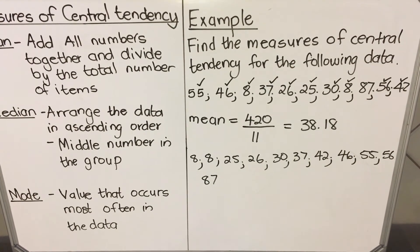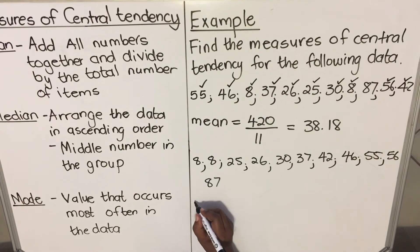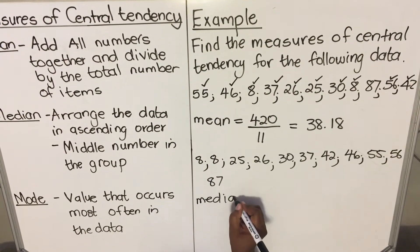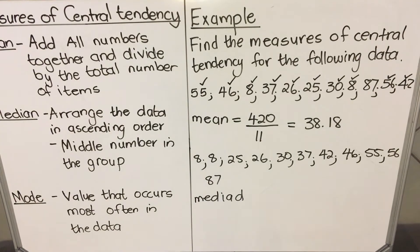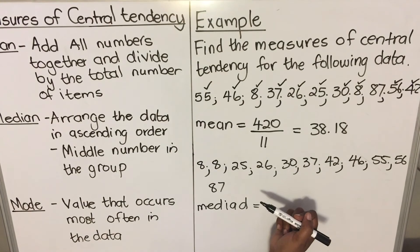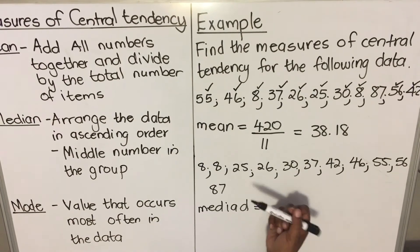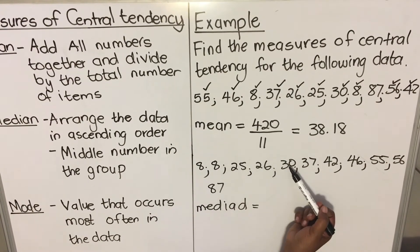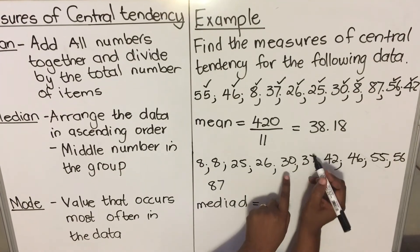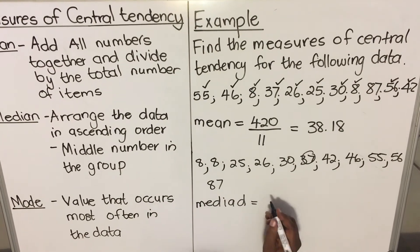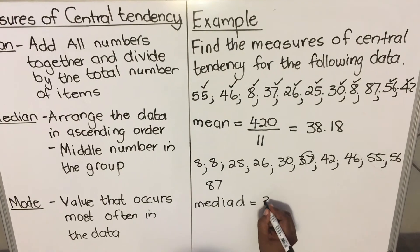Let's find the median — the middle number. Because my total data set has 11 items, it means it's the sixth one. Count from the left: 1, 2, 3, 4, 5 — that's this one — and from the right: 1, 2, 3, 4, 5. So my median is 87.